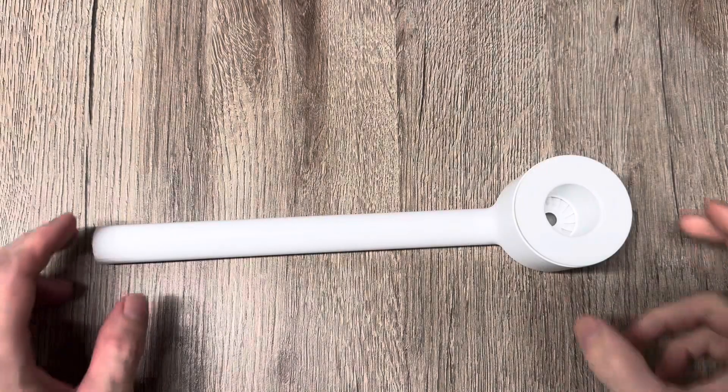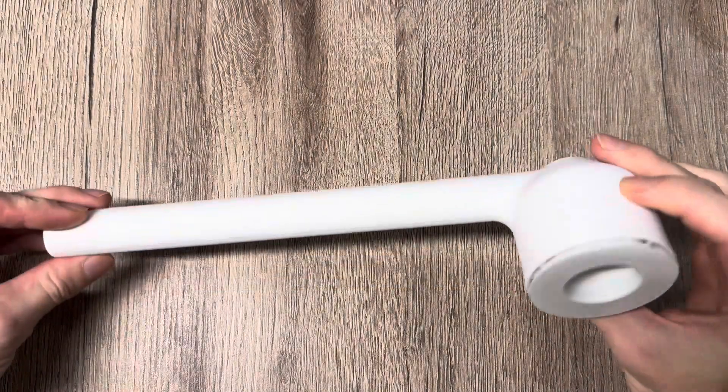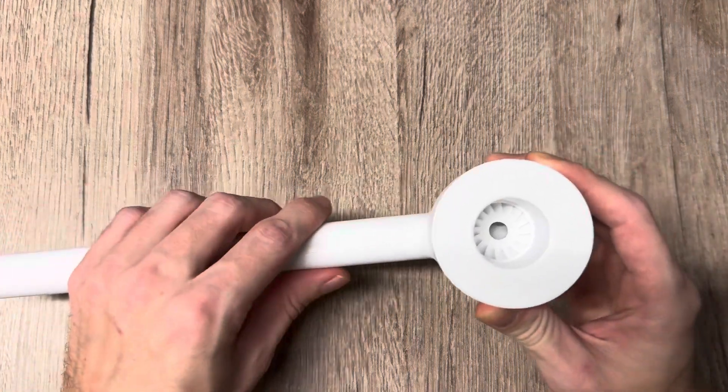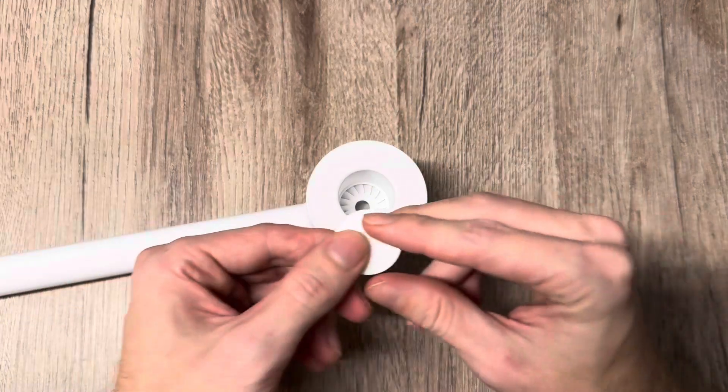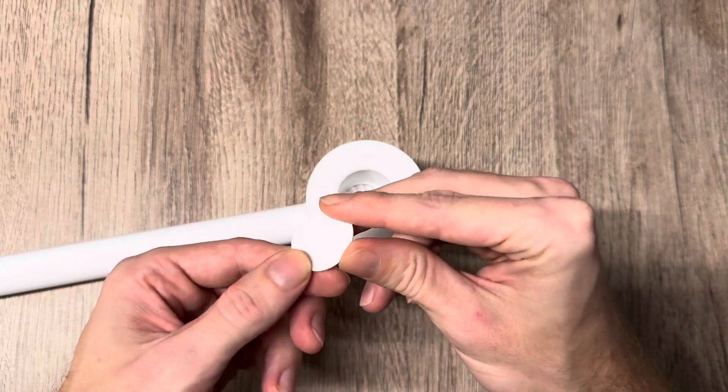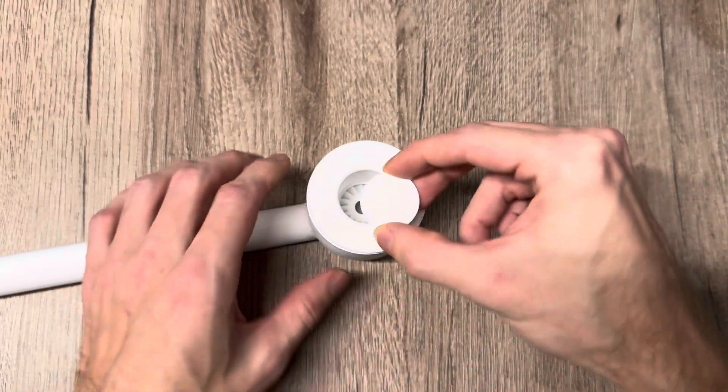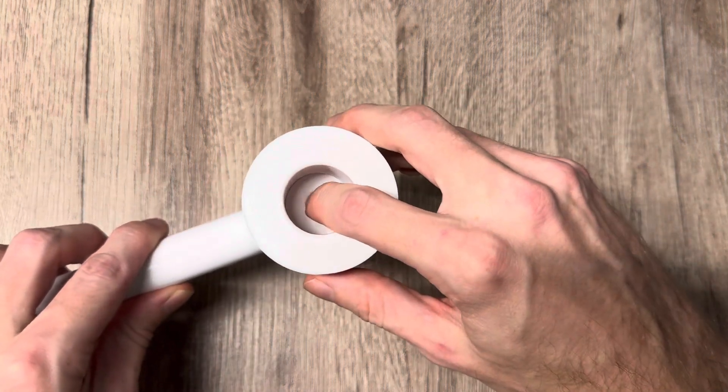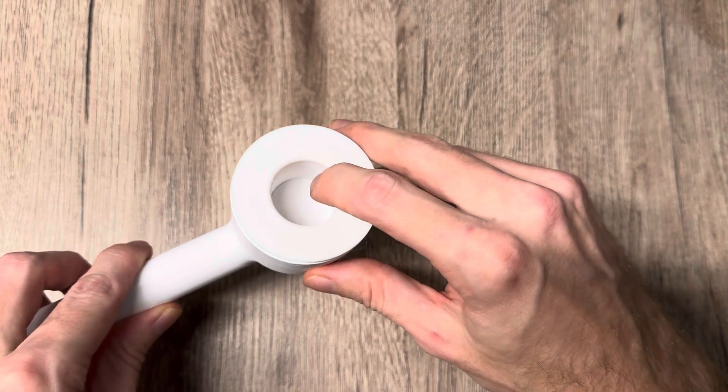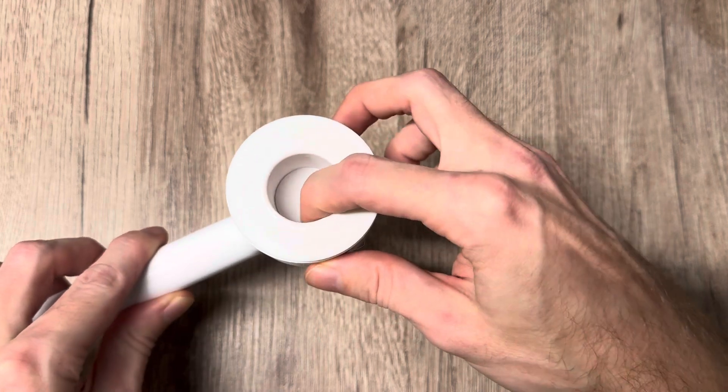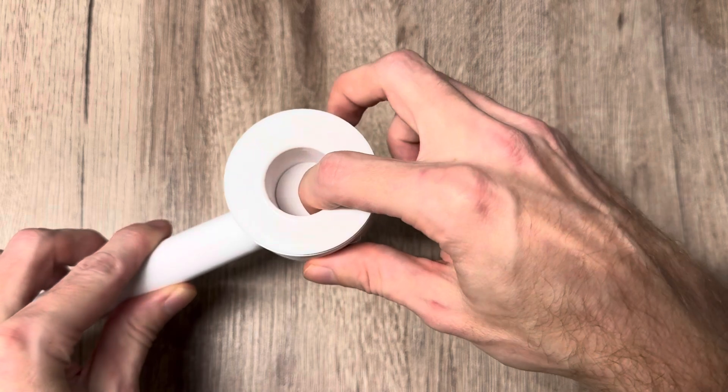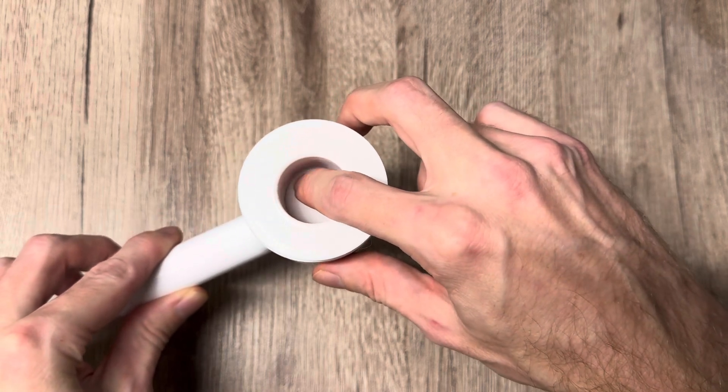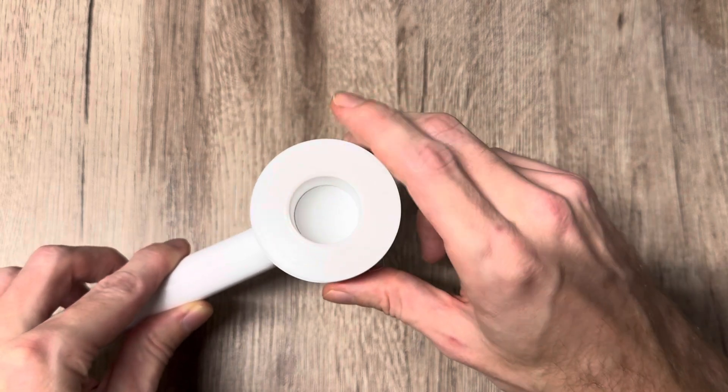So now that we have printed everything you should end up with a shower head that looks like this. And now we are going to assemble it. The first step is we take this plastic disc that we also printed and insert it into this hole right here like this. And then you take some water resistant liquid glue and just put some of it right here around the edge to seal everything up and make this whole thing watertight. Then you let it dry.